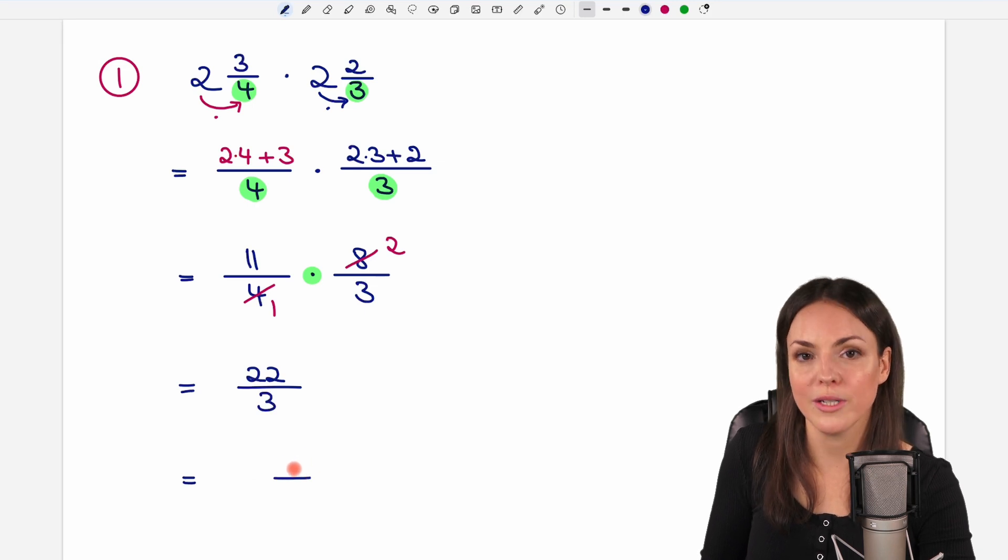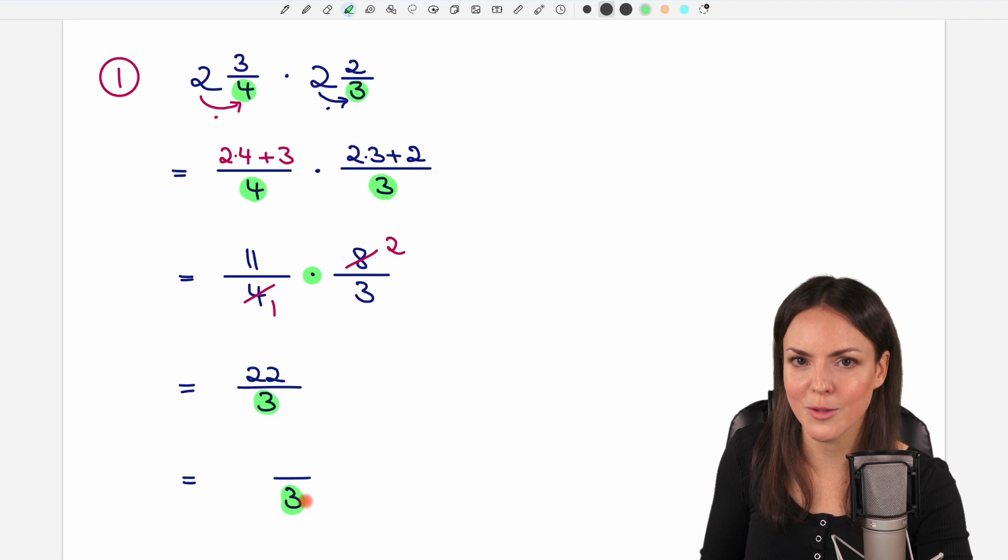So, how do we do it? We've seen that the denominator doesn't change, so the number on the bottom, we just have to keep it, the 3, that's the easy part.